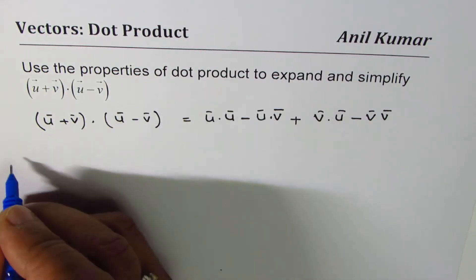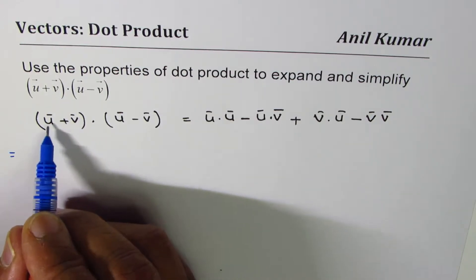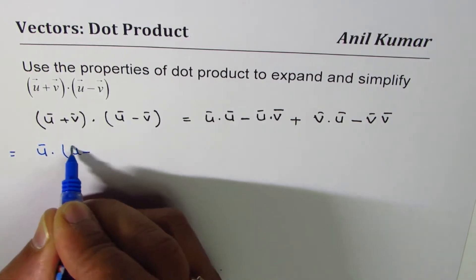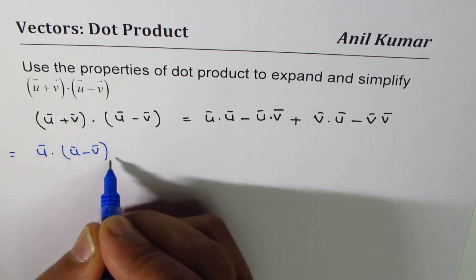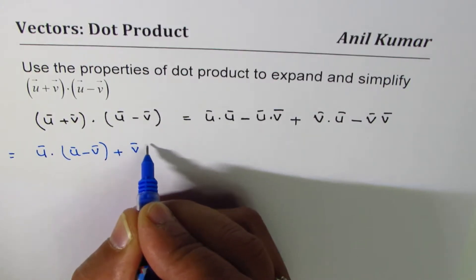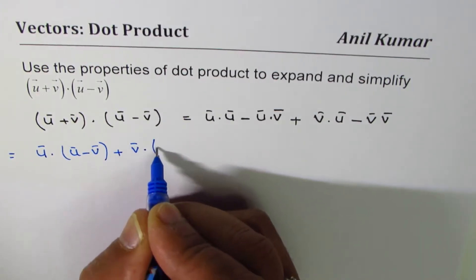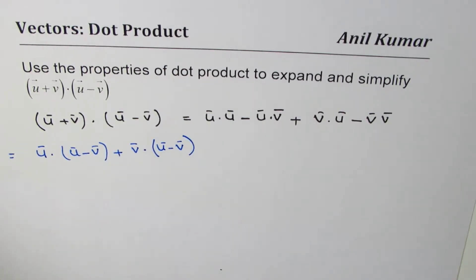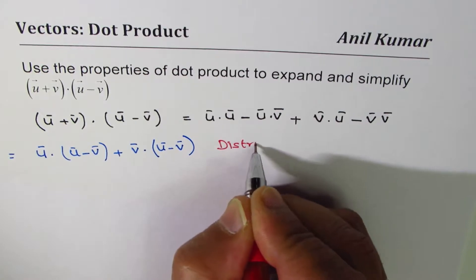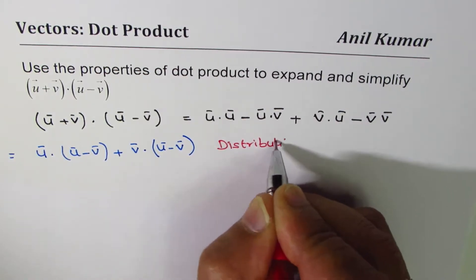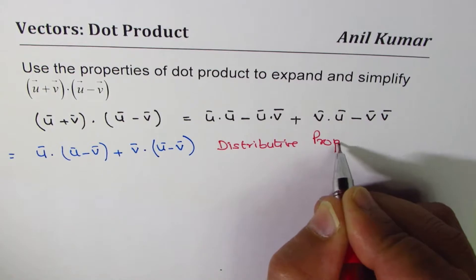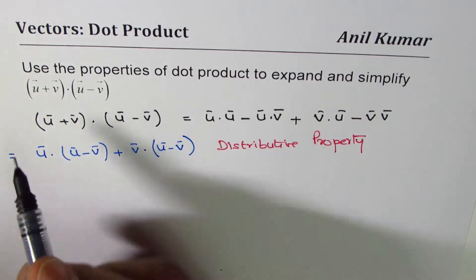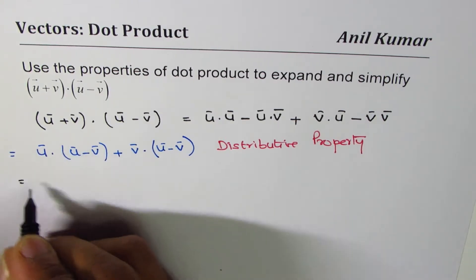What we really did in this particular step - let me show you the details. Let me redo it. What I'm doing here is first the dot product with vector u for (u - v), and then with vector v for (u - v). This is called the distributive property.